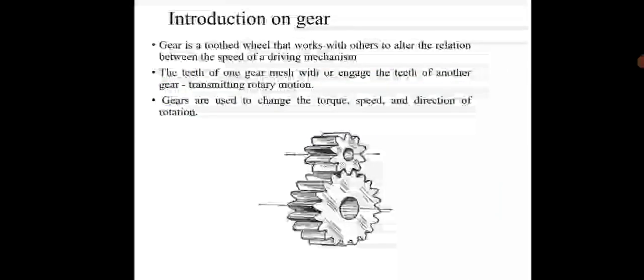Introduction on gears: The gear is a toothed wheel that works with others to alter the relation between the speed of driving mechanism. The teeth of one gear mesh or engage with the teeth of another gear, transmitting the rotary motion. Gears are used to change the torque, speed, and direction of rotation. The diagram shows the gears.